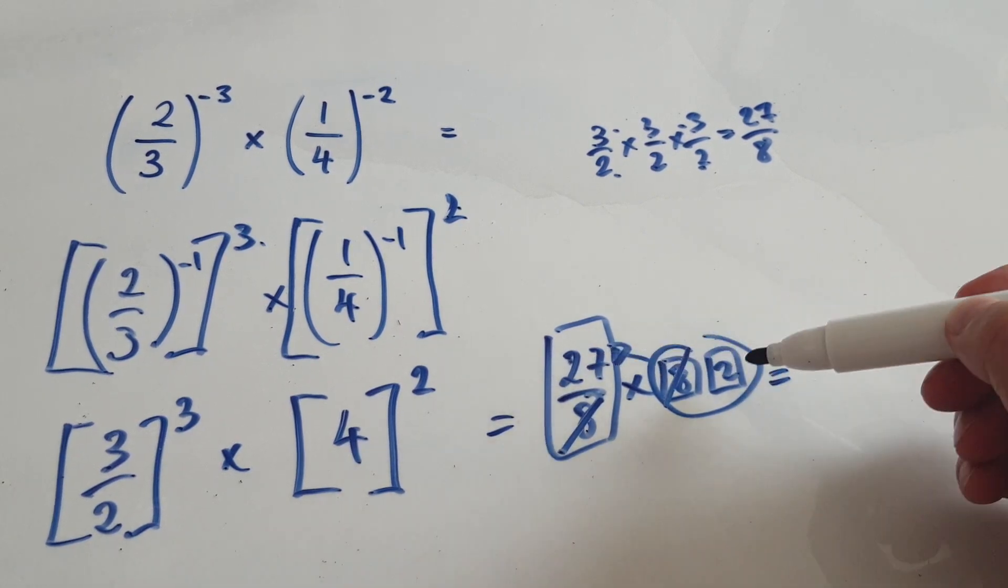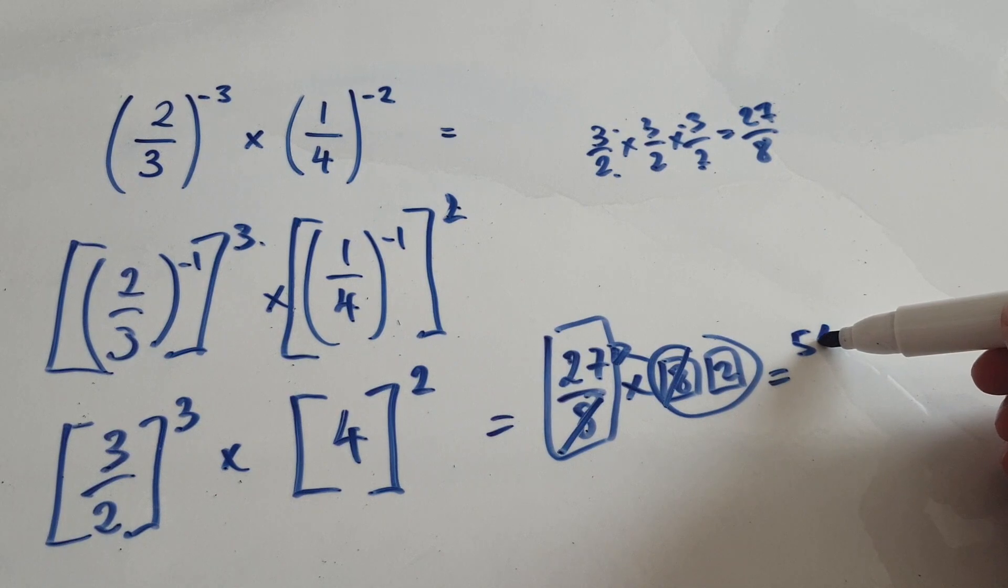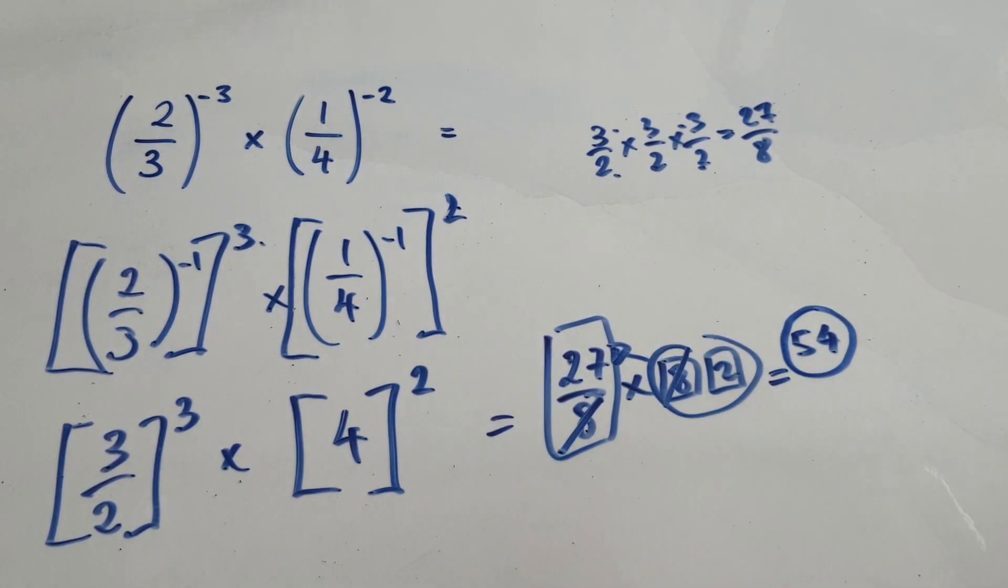So really, it boils down to 27 times 2, which will be 54. So that's your final answer. The answer is 54.